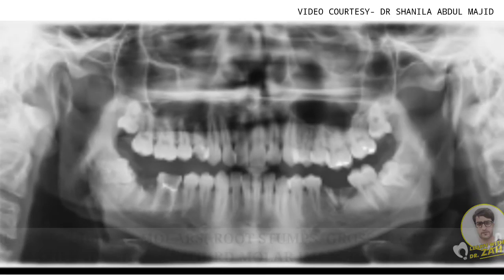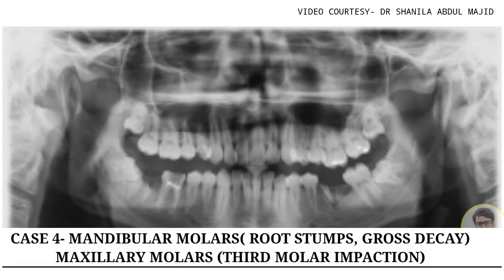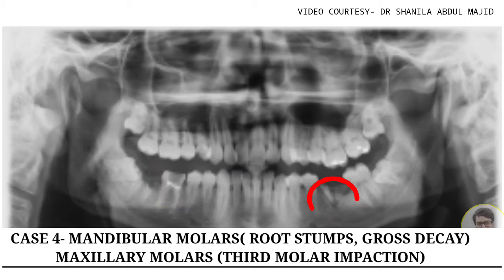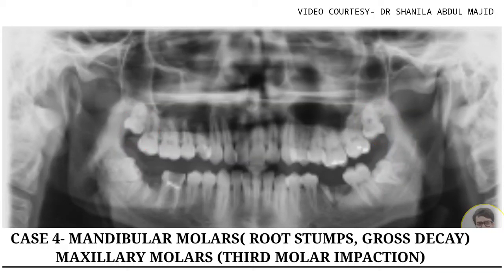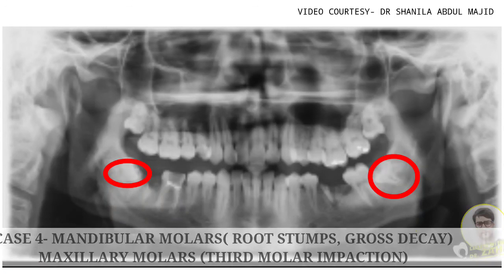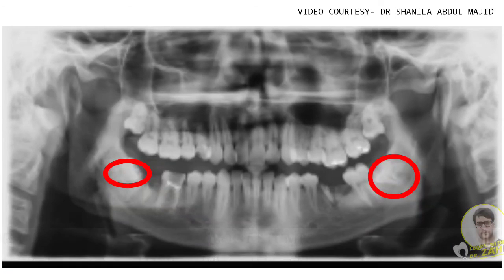The next case scenario shows a lot of retained roots, and the maxillary third molars are again found to be vertically impacted. You can also note that the mandibular third molars are found to be horizontally impacted when compared to the 7s.